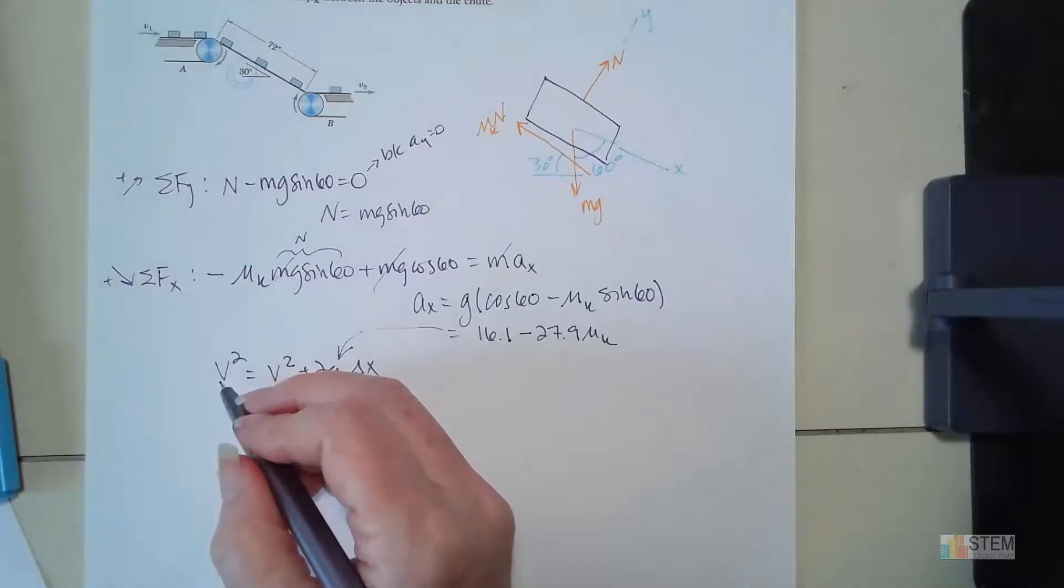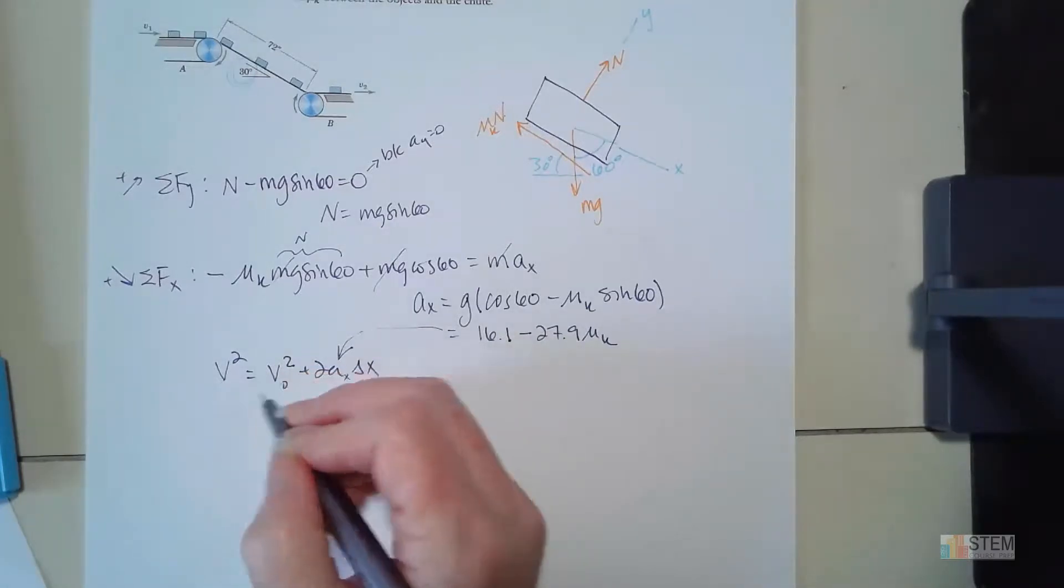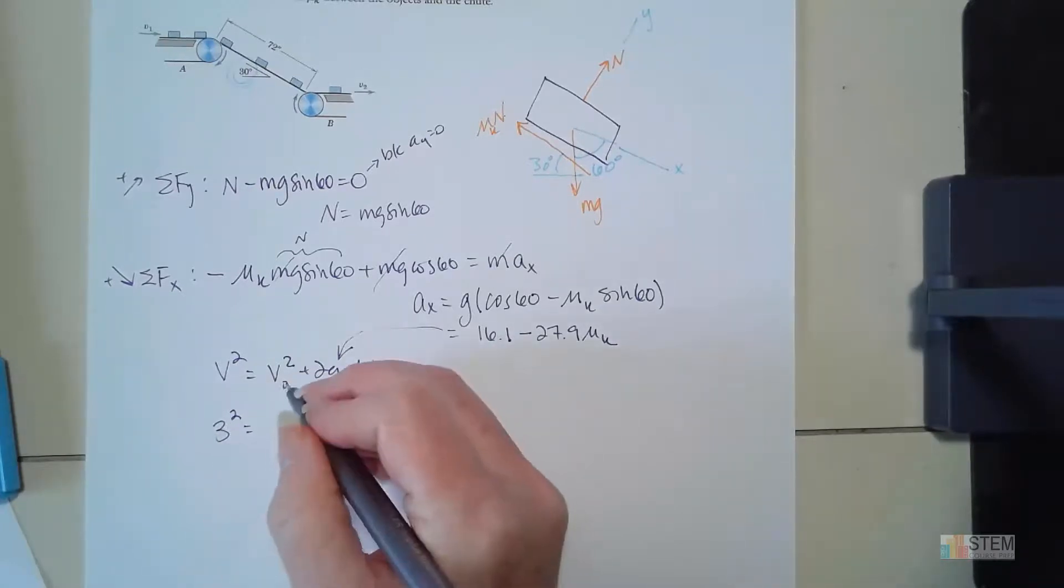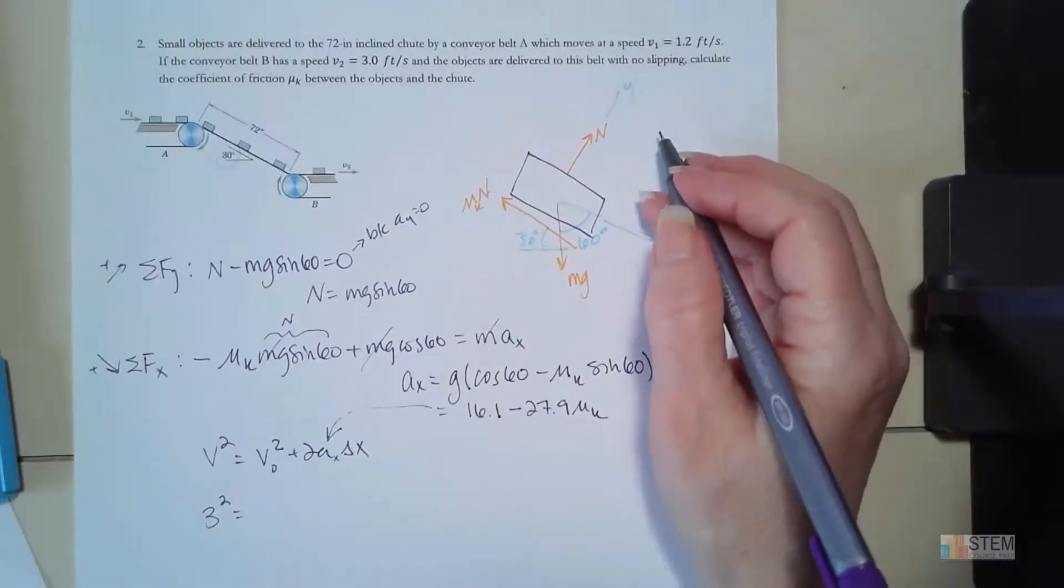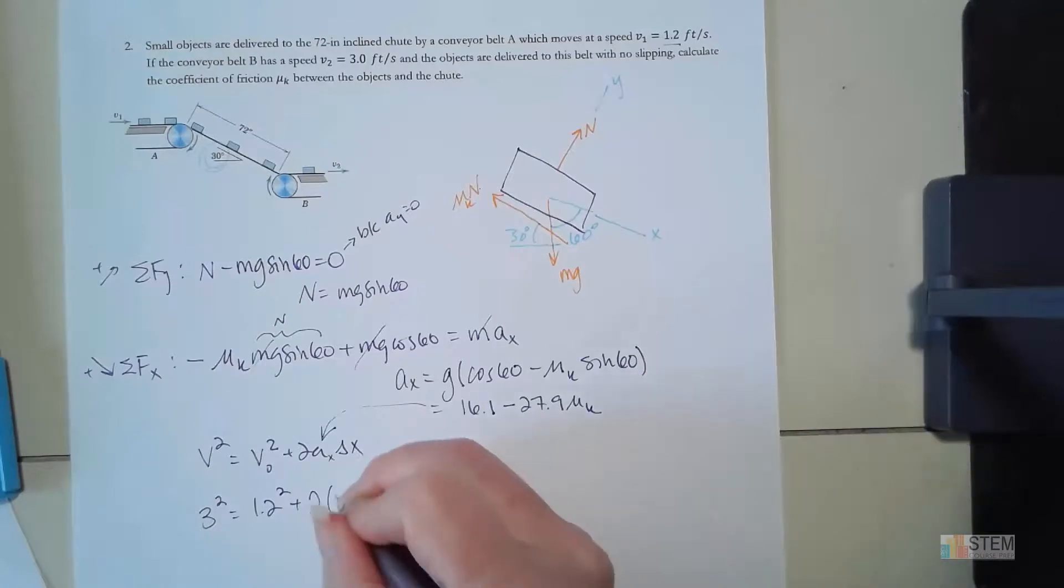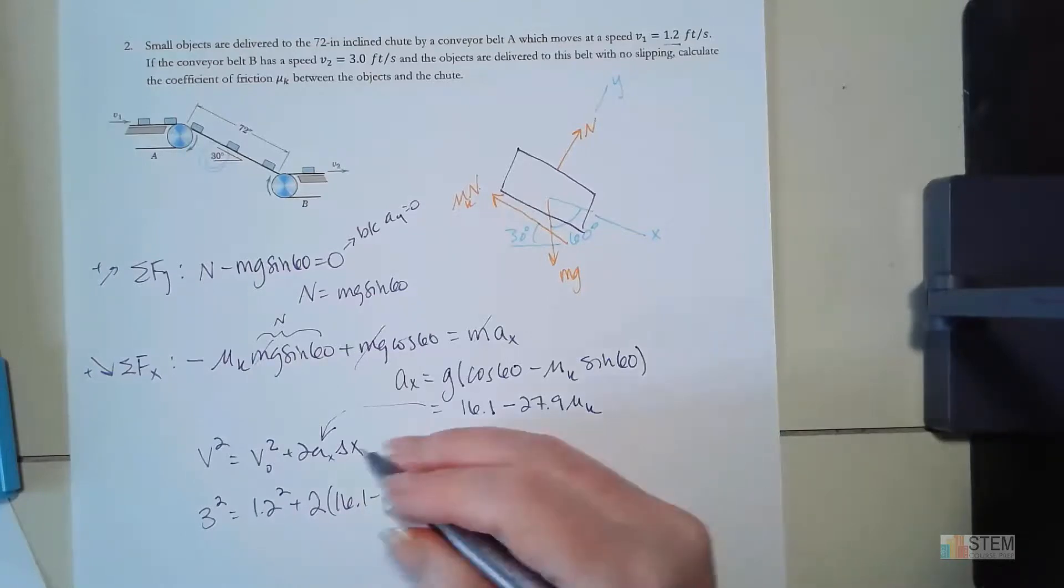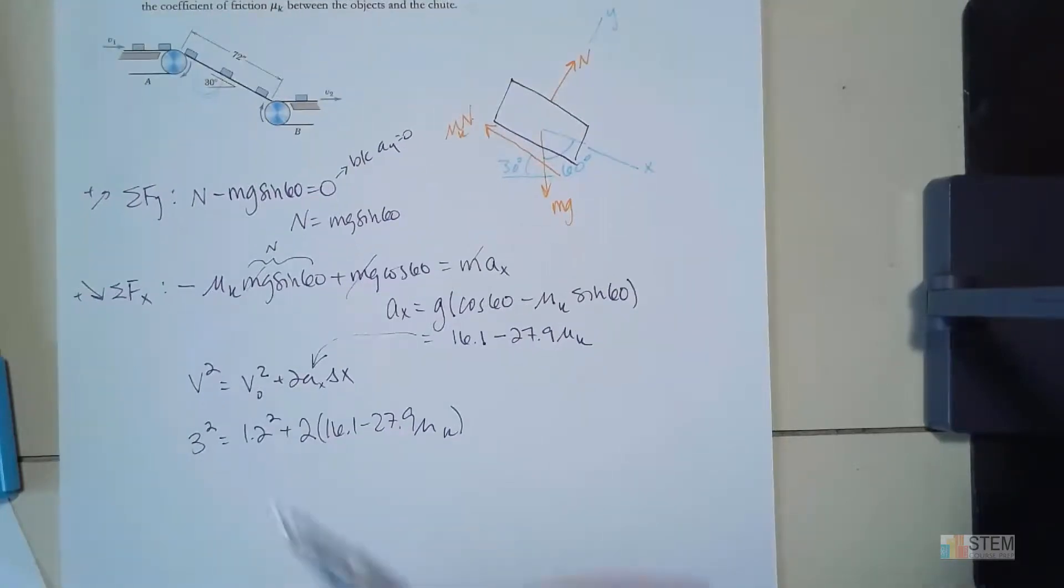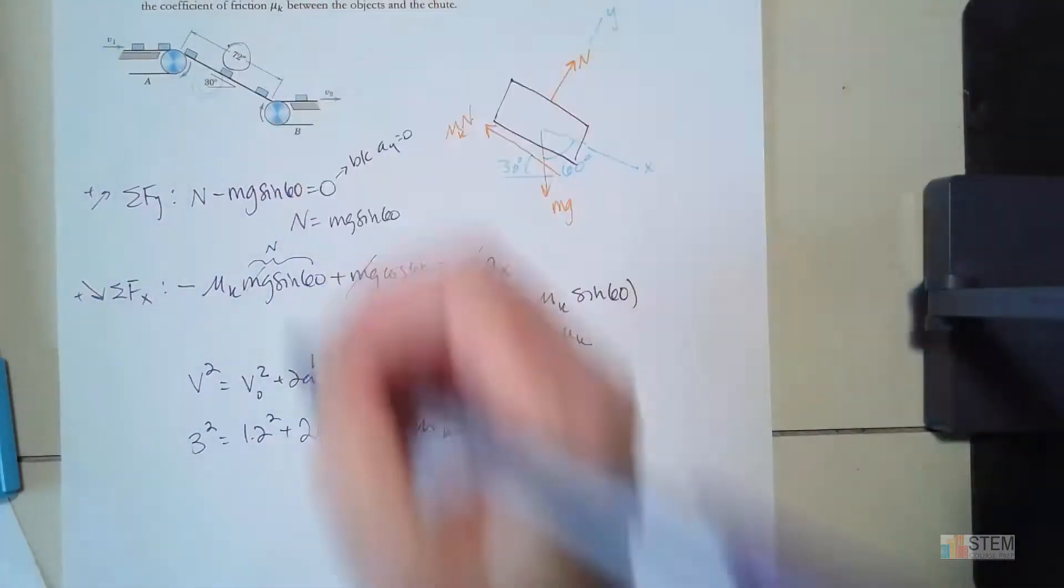Okay, v squared, what do we think that is? Well this is our final, so this is going to be 3 squared. Then we need to set it equal to the initial velocity squared. The initial velocity is 1.2, so let's square that. Then we're going to have plus 2 times 16.1 minus 27.9 mu k. And then we have our delta x. What's delta x going to be? It's going to be the distance we traveled on this incline chute, so that's going to be 72 inches.